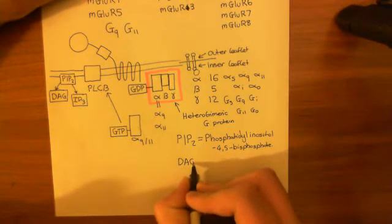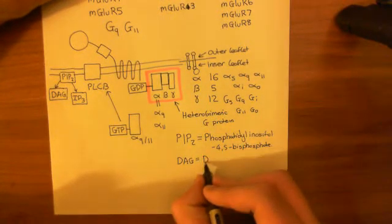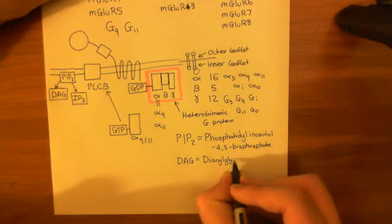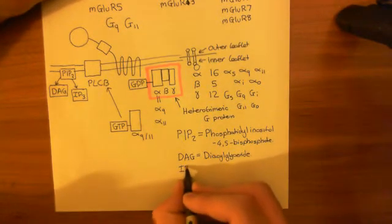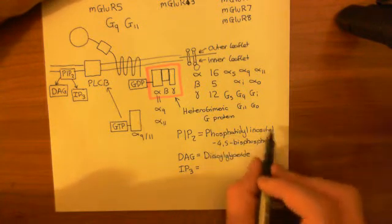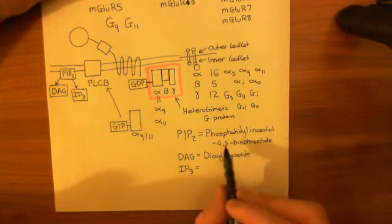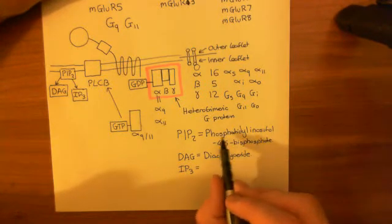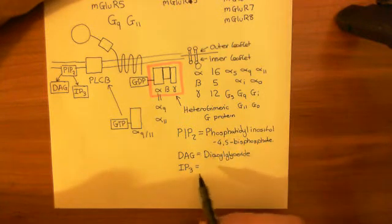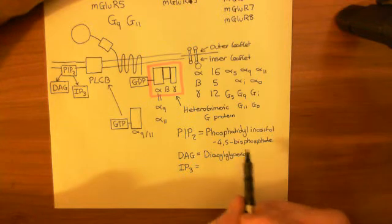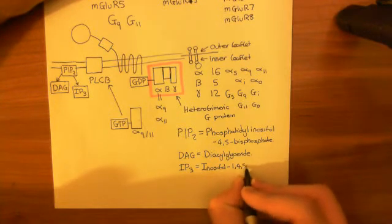DAG stands for diacylglyceride — that is glycerol bonded to two fatty acids, which is what you get from a phospholipid if you cut off the phosphate group. IP3 is inositol 1,4,5-trisphosphate: when PIP2 is cleaved, the inositol 4,5-bisphosphate is released along with the original phosphate group from the phospholipid component, giving you inositol 1,4,5-trisphosphate.